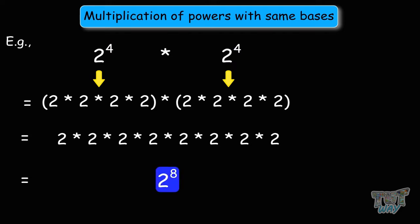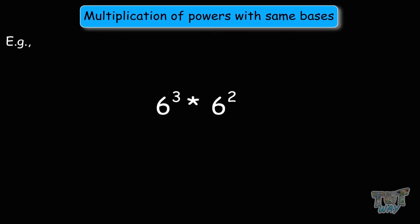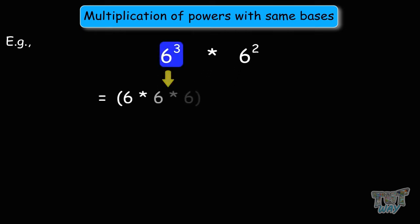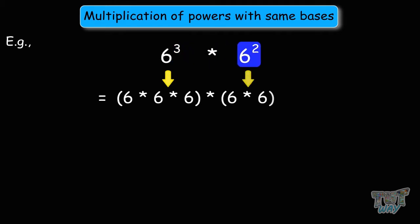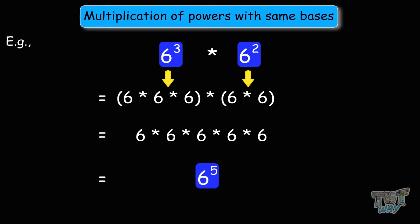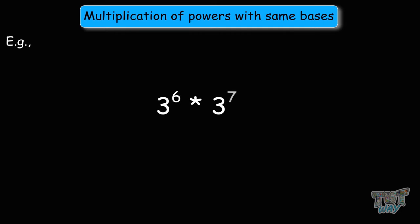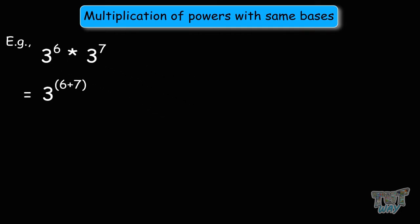Next question: we have to multiply 6 to the power of 3 with 6 to the power of 2. 6 to the power of 3 means 6 times 6 times 6, and 6 to the power of 2 means 6 times 6. So we have to multiply 6 with itself 5 times, giving us 6 to the power of 5. This is our first law of exponents: when the bases are the same and you multiply the powers, you add the exponents. Another example: 3 to the power of 6 times 3 to the power of 7 equals 3 to the power of 13.